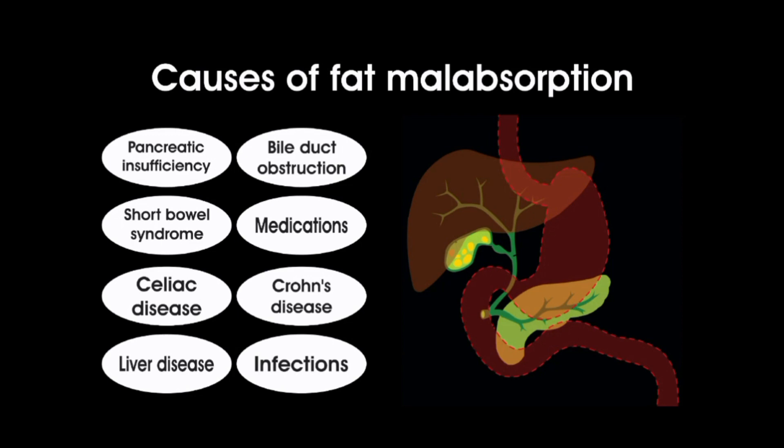There are several possible causes of fat malabsorption. Some of the most common causes include pancreatic insufficiency. The pancreas produces enzymes that are necessary for the digestion of fats. If the pancreas is not producing enough enzymes, fat malabsorption can occur. Bile duct obstruction: bile is produced by the liver and stored in the gallbladder. It is necessary for the digestion of fats. If the bile ducts become blocked, fat malabsorption can occur.